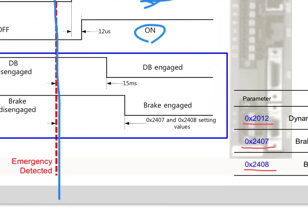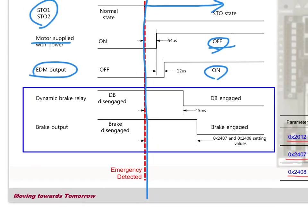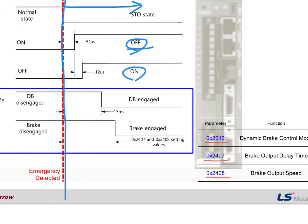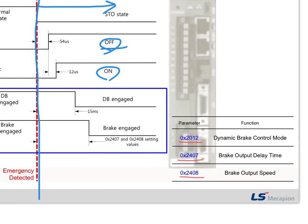And after EDM output is generated, the dynamic brake is engaged and actually the brake operates by setting the parameters like here.